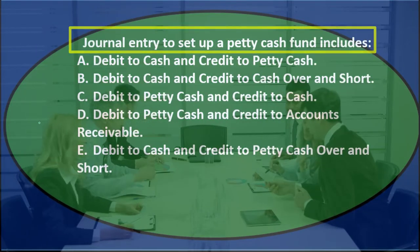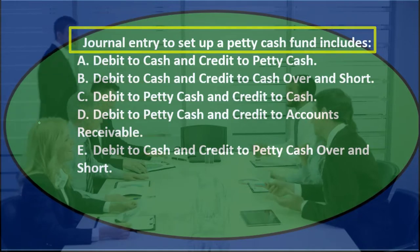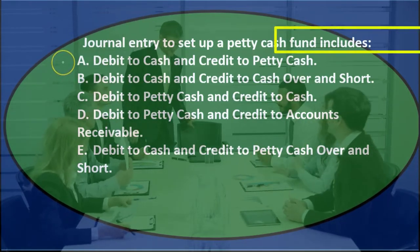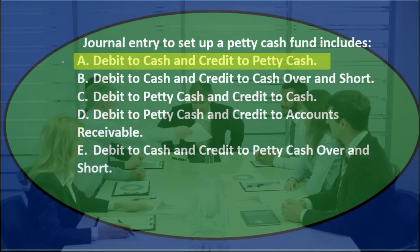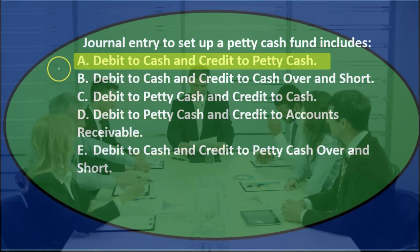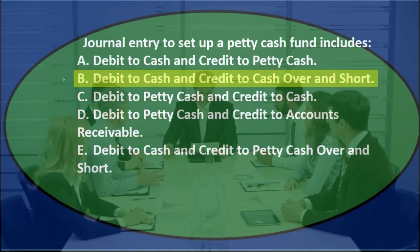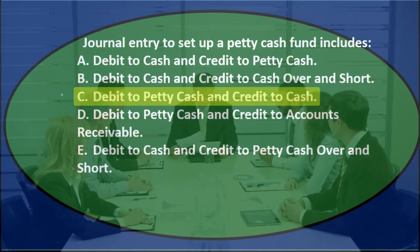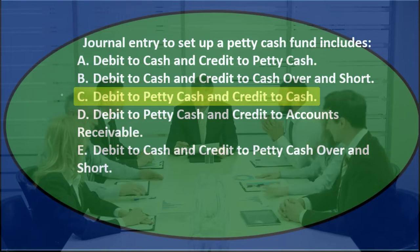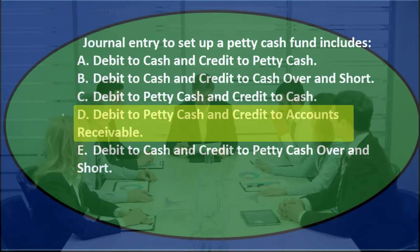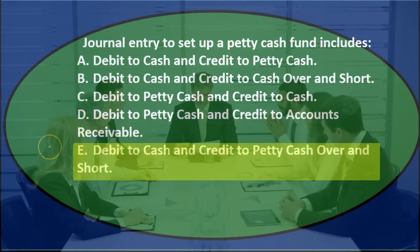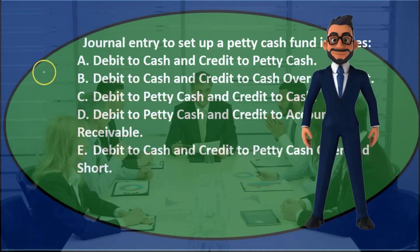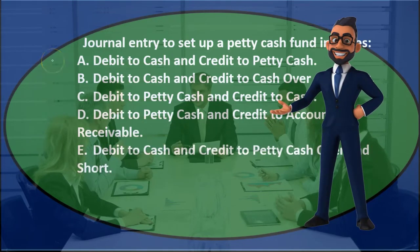Next question: the journal entry to set up a petty cash fund includes — A) debit to cash and credit to petty cash; B) debit to cash and credit to cash over and short; C) debit to petty cash and credit to cash; D) debit to petty cash and credit to accounts receivable; E) debit to cash and credit to petty cash over and short.